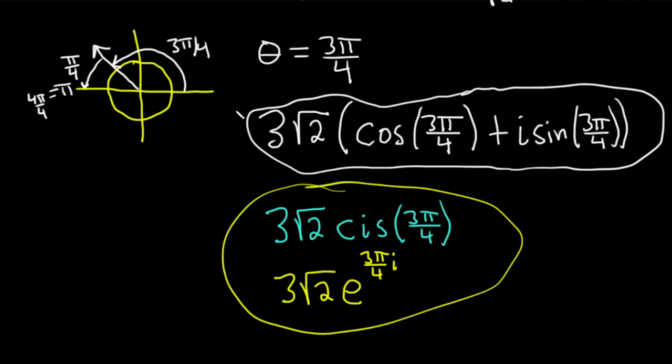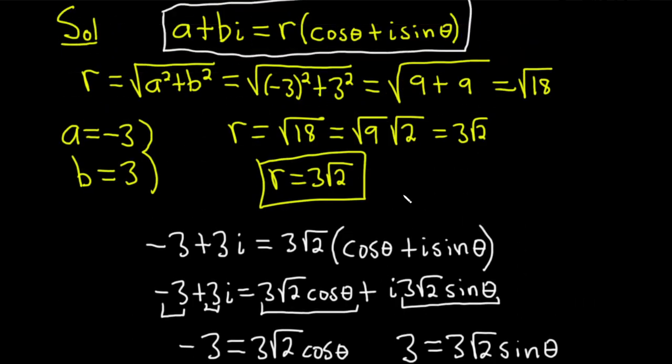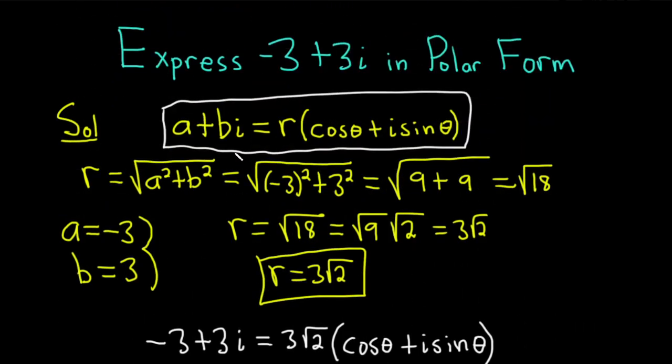So three different ways to answer the question. I hope this video has helped someone in the world who's trying to learn this. And just remember, to do these problems, just know what polar form is. So just know that A plus B I is equal to R times cosine theta plus I sine theta. Know the formula for R. And that's it, right? That's it.